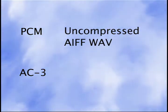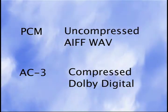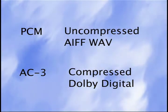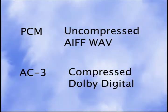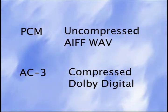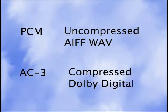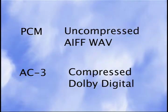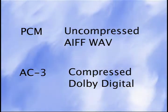AC3, sometimes called Dolby Digital Audio, is compressed 48 kHz audio. Despite being compressed, it produces high quality while reducing file size and bitrate. The comparison between the two is similar to the comparison between audio CD and MP3. MP3 is a lower quality, but most don't notice the difference.